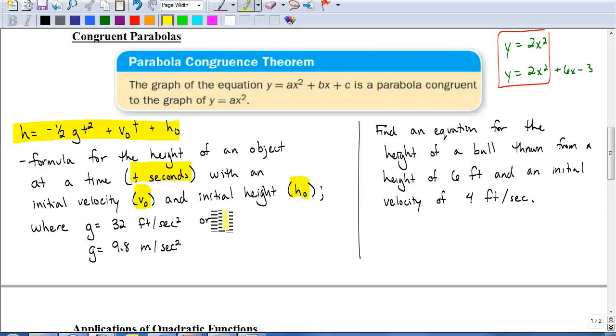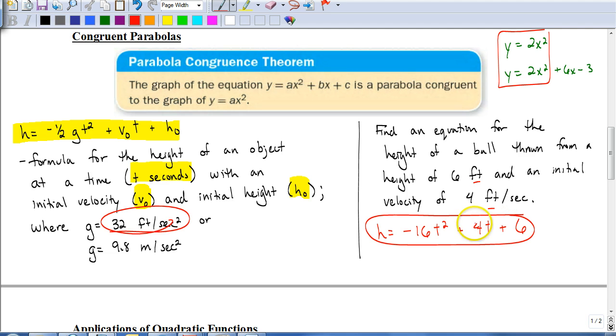So let's look at an example where it says, where we have to come up with the equation here. It says, find an equation for the height of a ball thrown from an initial height of 6 feet, and an initial velocity of 4 feet per second. So my equation would simply be h equals, the fact that everything is in feet here tells me I'm going to use my 32 feet per second. Well, my equation is negative 1 half times g, so half of 32 is 16, so it's going to be negative 16 times t squared, plus my initial velocity. My initial velocity is the 4, so it's going to be 4t, and then plus my initial height, which is 6. So it would be negative 16t squared plus 4t plus 6. So that's how you'd come up with your equation.